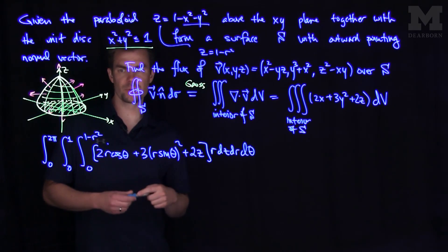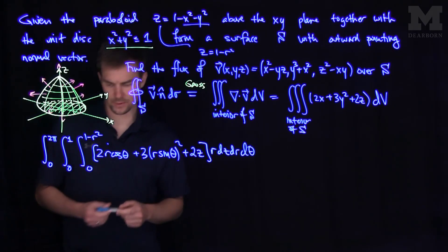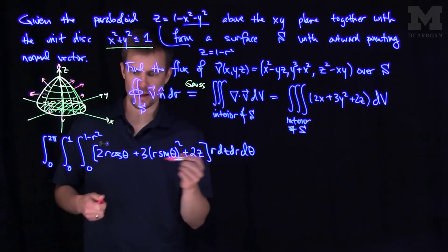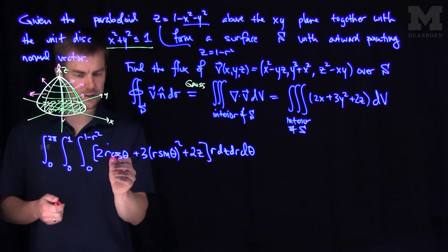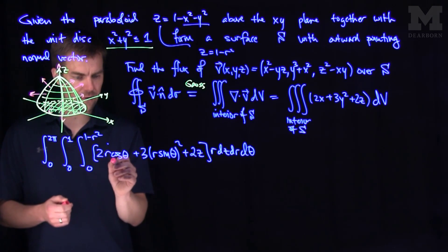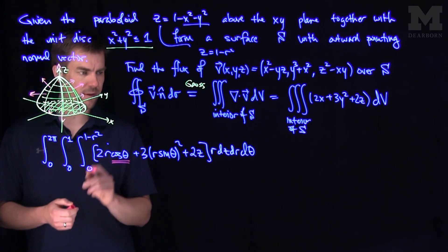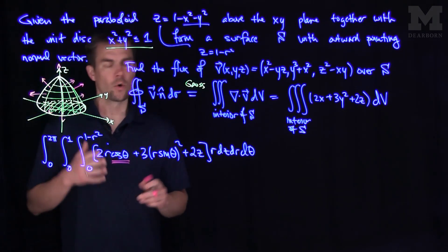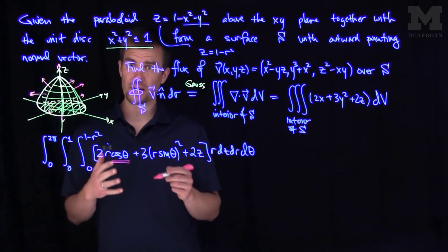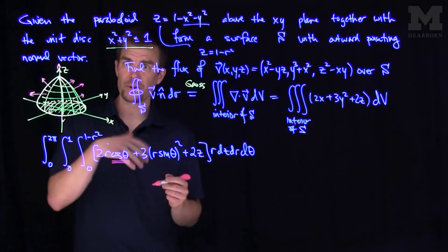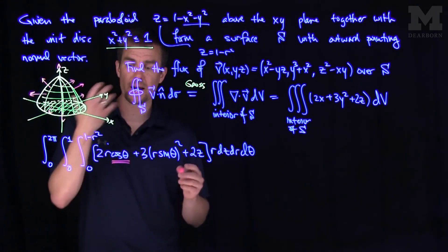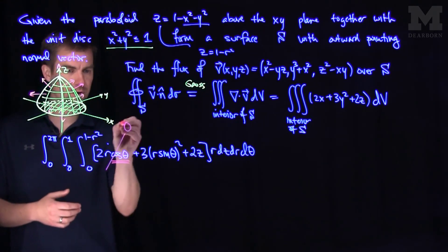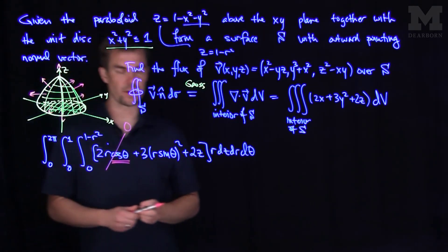Now we can make some reductions. The first term contains cosine theta. When we integrate cosine theta from 0 to 2pi, that integral is 0, so this term goes to zero — we don't need to do any integration there. So we have two remaining integrals to do.